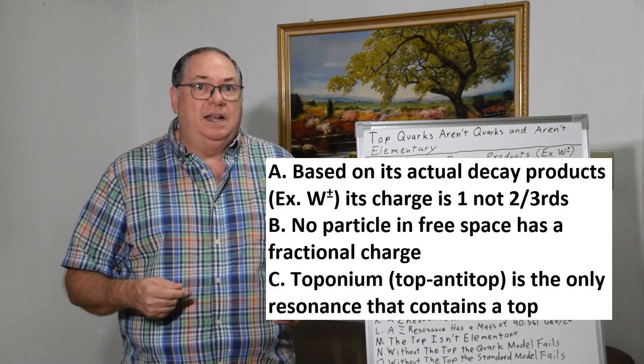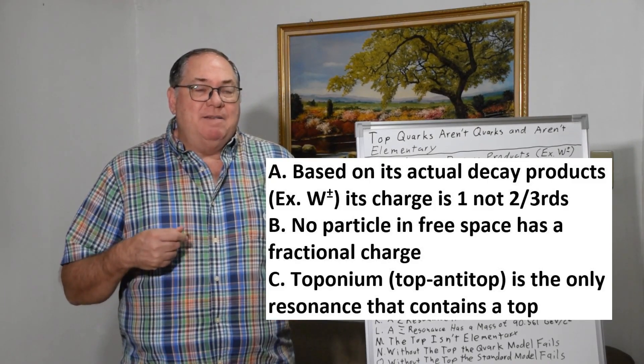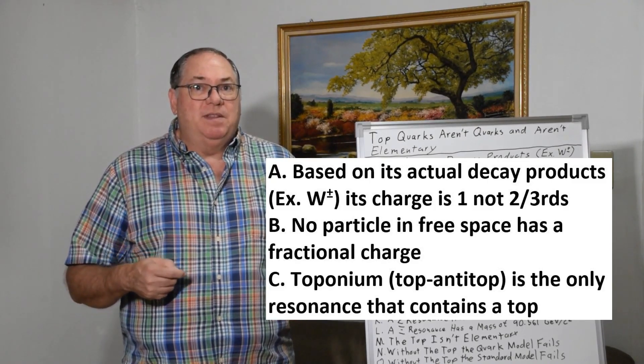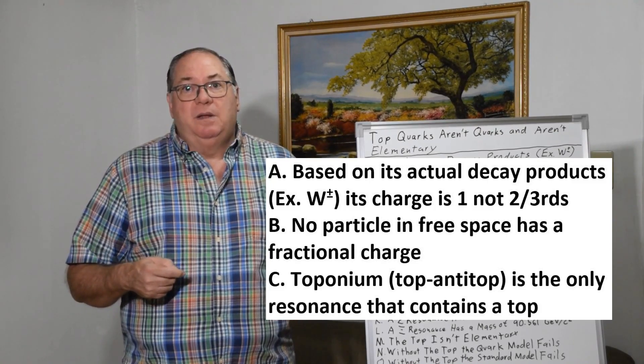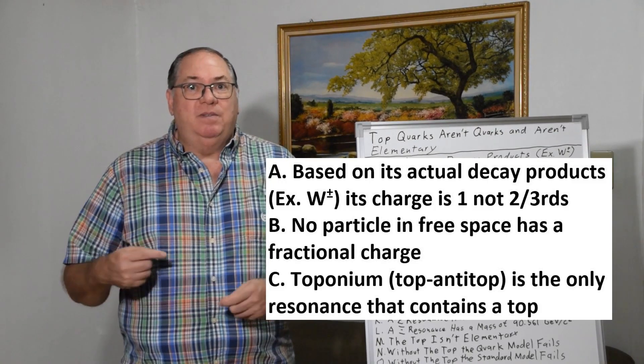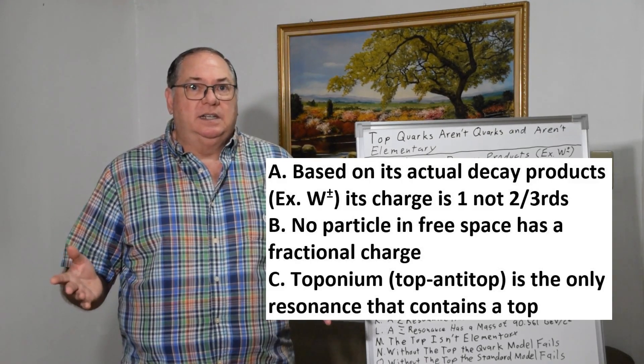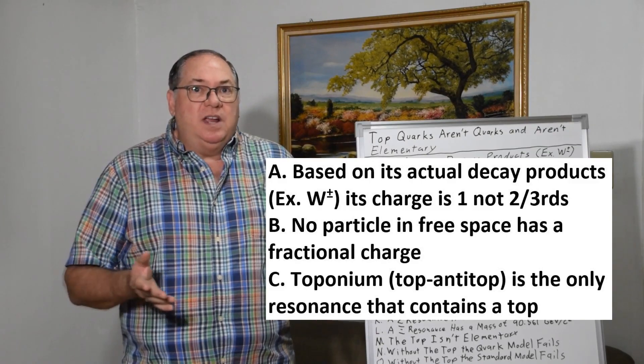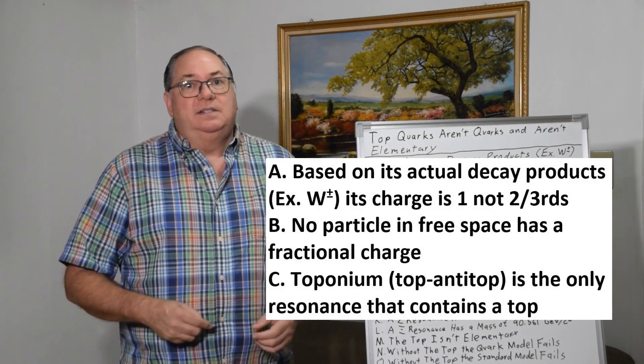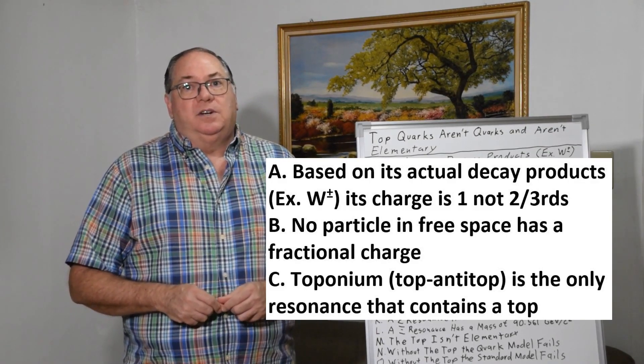Based on acceptance of the theory first and then using the theory to prove that the theory is right, it's purely circular logic. If you look at the actual physical evidence, the top quark has a charge of one, which right there means it's not a quark.